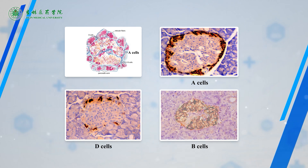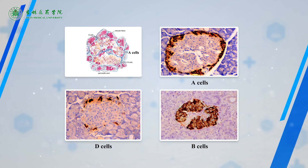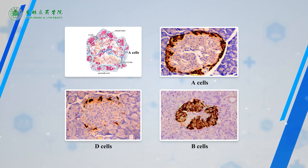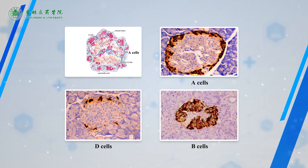B cells constitute 70% of the islet cell population and are usually located in the center of the islet. B cells secrete insulin, which is antagonistic to glucagon, and facilitates the utilization of glucose by increasing glucose oxidation and glycogenesis, thus lowering blood sugar levels.